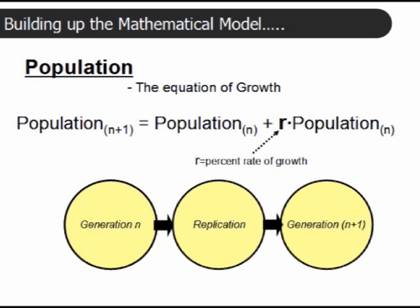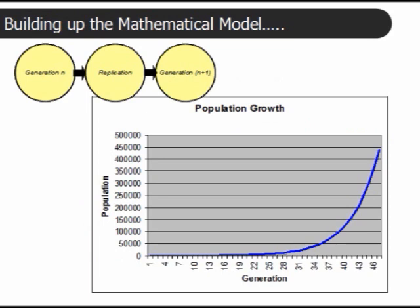So, this accumulating population goes on replicating itself generation after generation. This kind of equation, which shows how things are now and how things are in one increment in time and in the future, is called a difference equation.